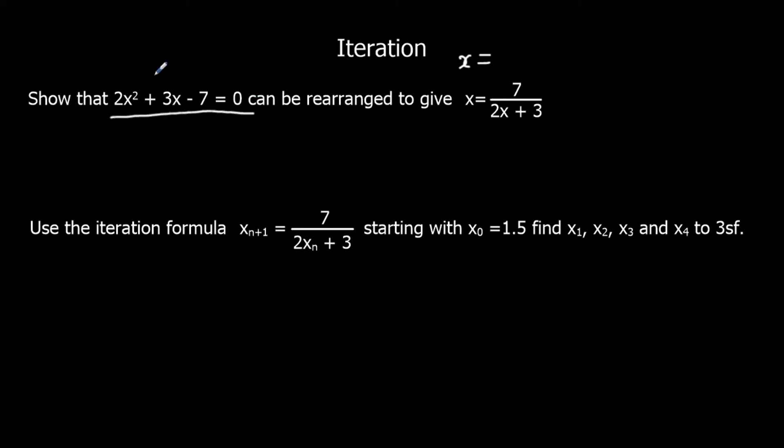So we're going to rearrange this now. The first step would be to add 7 to both sides. And then we're going to factorize out an x, so take x outside the bracket, which leaves 2x plus 3 inside the bracket, equals 7. And then divide both sides by 2x plus 3, which gives us 7 over 2x plus 3.